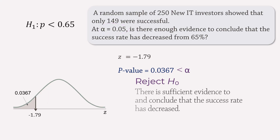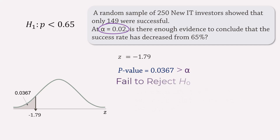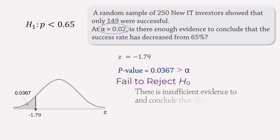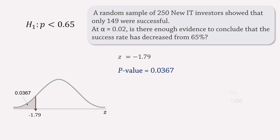But if alpha were 0.02, the p-value will be greater than alpha, and we will fail to reject the null hypothesis — we would have insufficient evidence to conclude that the success rate has decreased. And that's it. To be continued.